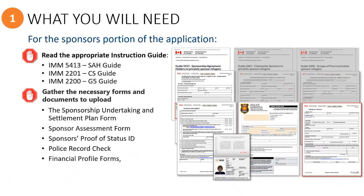Financial profile forms must be completed by financial contributors who are pledging funds from their personal income. If these financial contributors belong to a group of five or community sponsorship group, or are a constituent group member or co-sponsor of a sponsorship agreement holder that is under risk management plan B or C, the financial forms will need to be uploaded to the PR Portal.